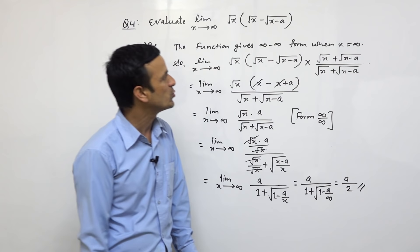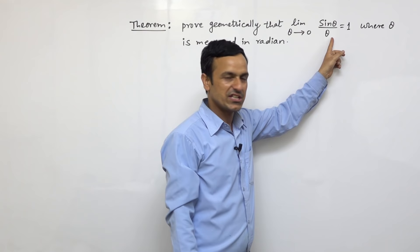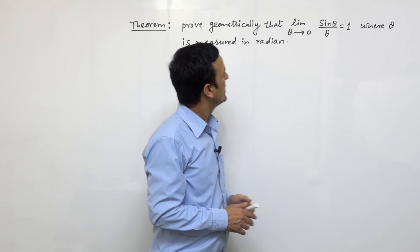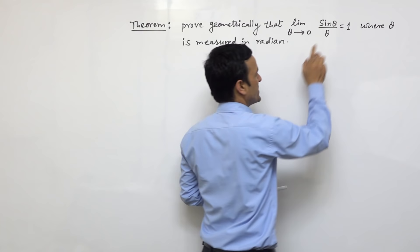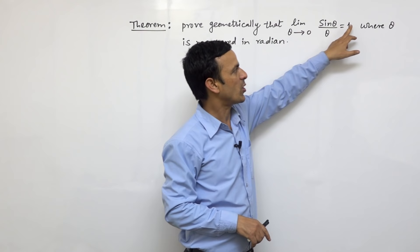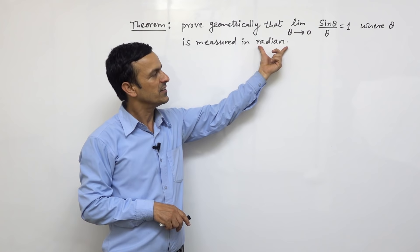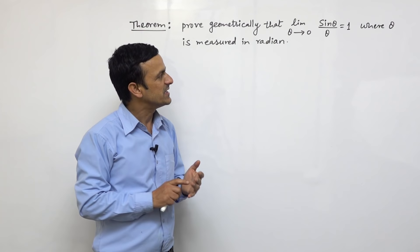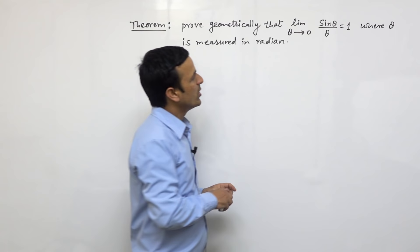Now we have one theorem: prove geometrically that limit of sin theta divided by theta when theta tends to 0 is equal to 1, where theta is measured in radians. This is a theorem related to the limit of trigonometric functions. Sin theta by theta when theta tends to 0 is always 1. We are going to prove this theorem where theta is measured in radian, not degree or grade.